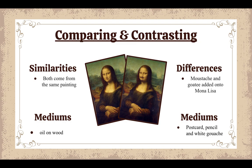Comparing and contrasting: the similarity between the two is that they're both the same painting. The difference is simply that a mustache and goatee were added onto the Mona Lisa in La Jaconde. The mediums for the Mona Lisa are oil and wood, while the mediums for La Jaconde are pencil and white gouache.